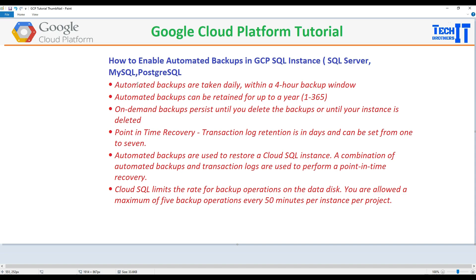Automated backups are taken daily within a four-hour backup window. You will define the window when you would like to take the backup - most of the time when there is least activity on your database. Automated backups can be retained for up to one year: one day, seven days, or the max of 365 days. There is only one automated backup per day for MySQL, SQL Server, and Postgres.